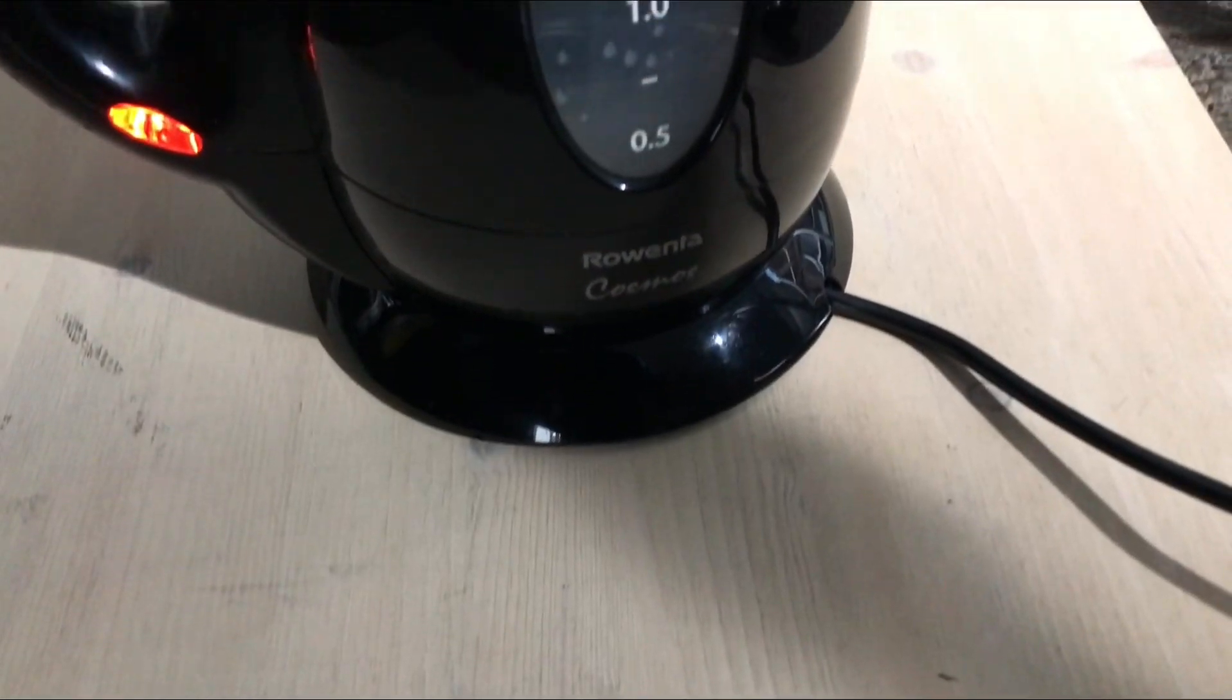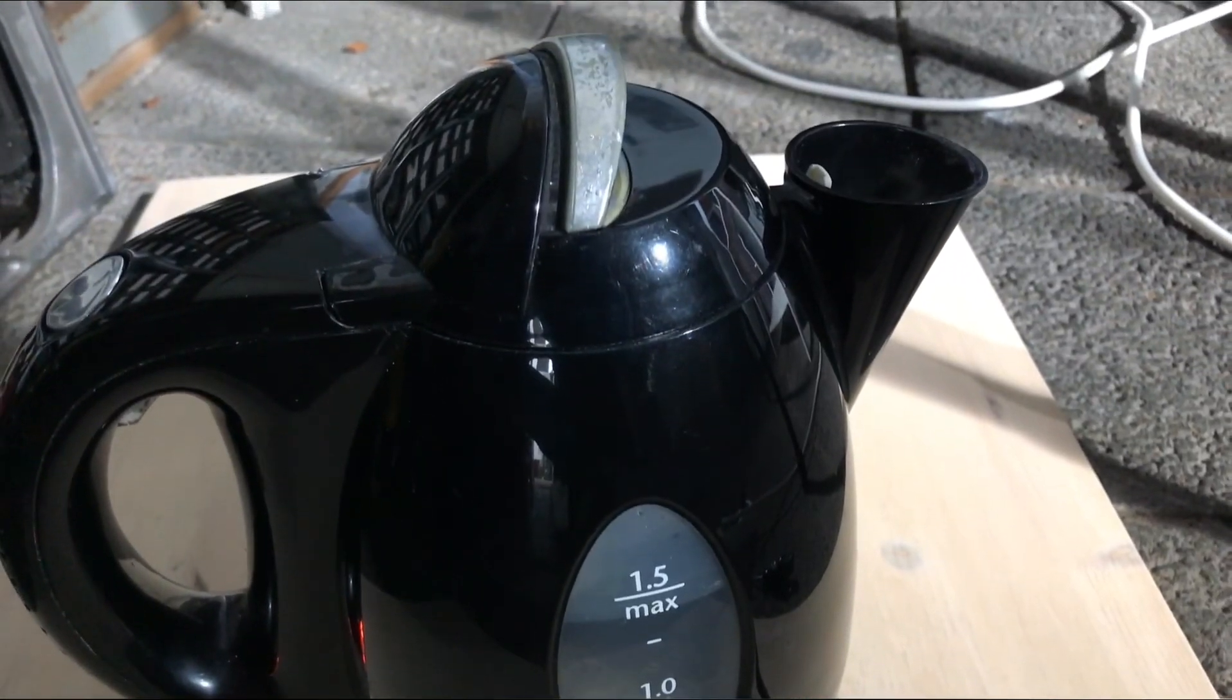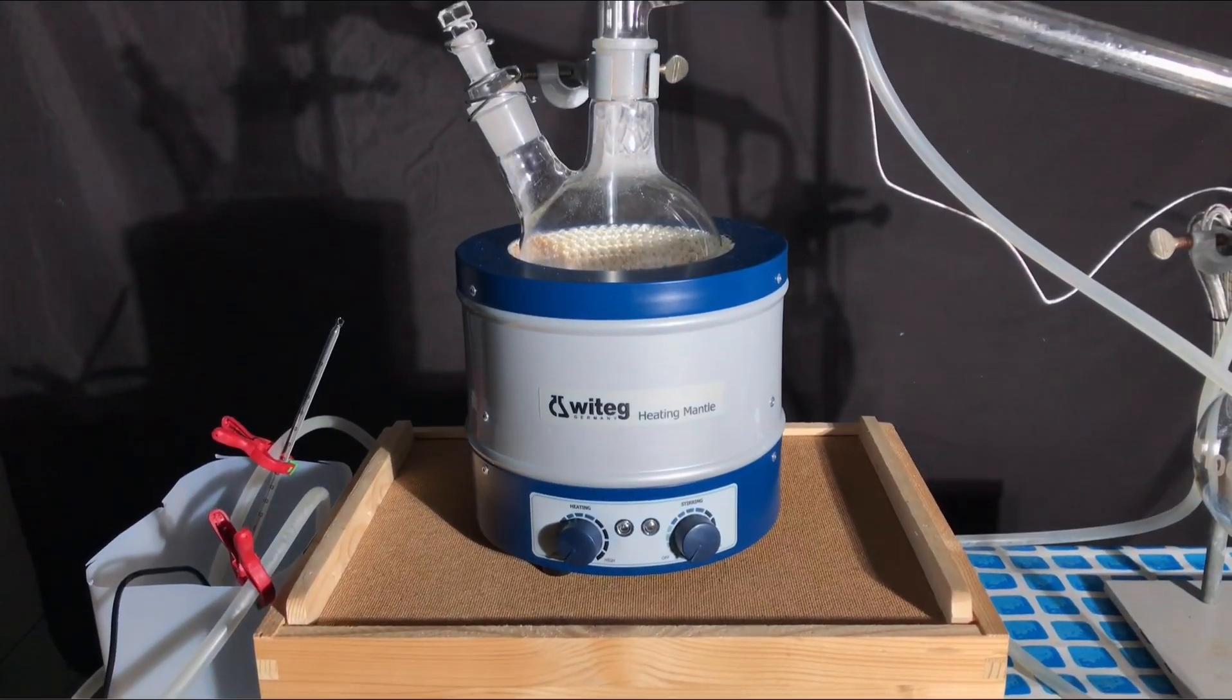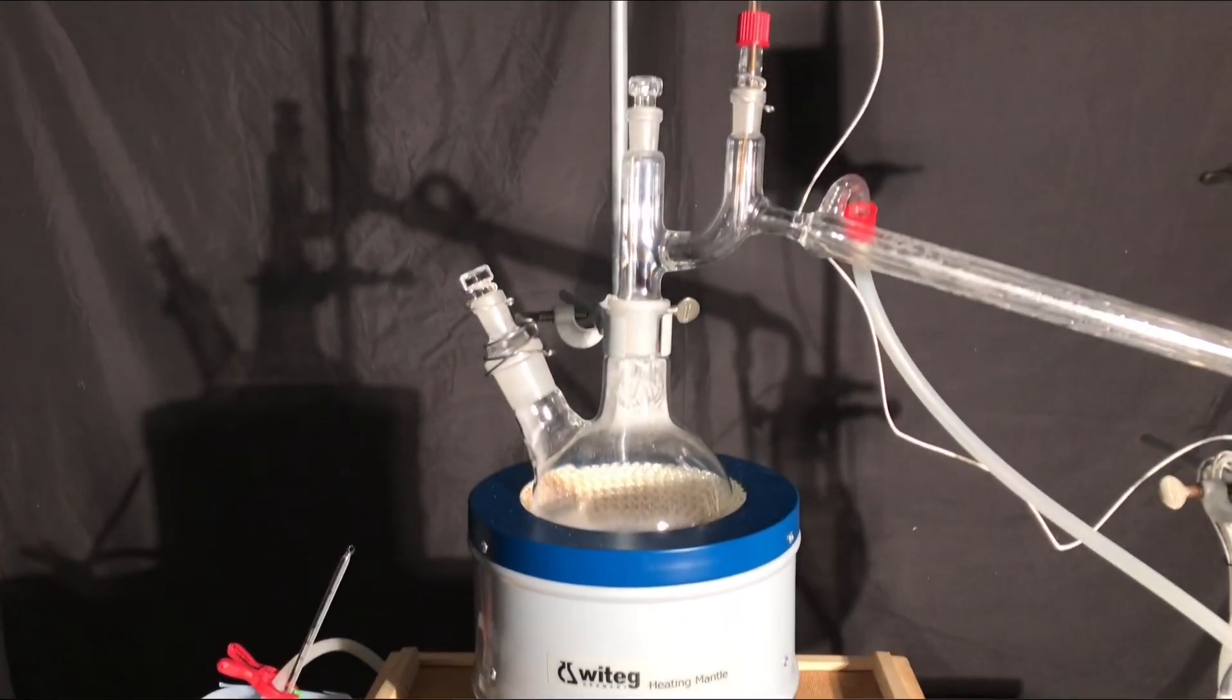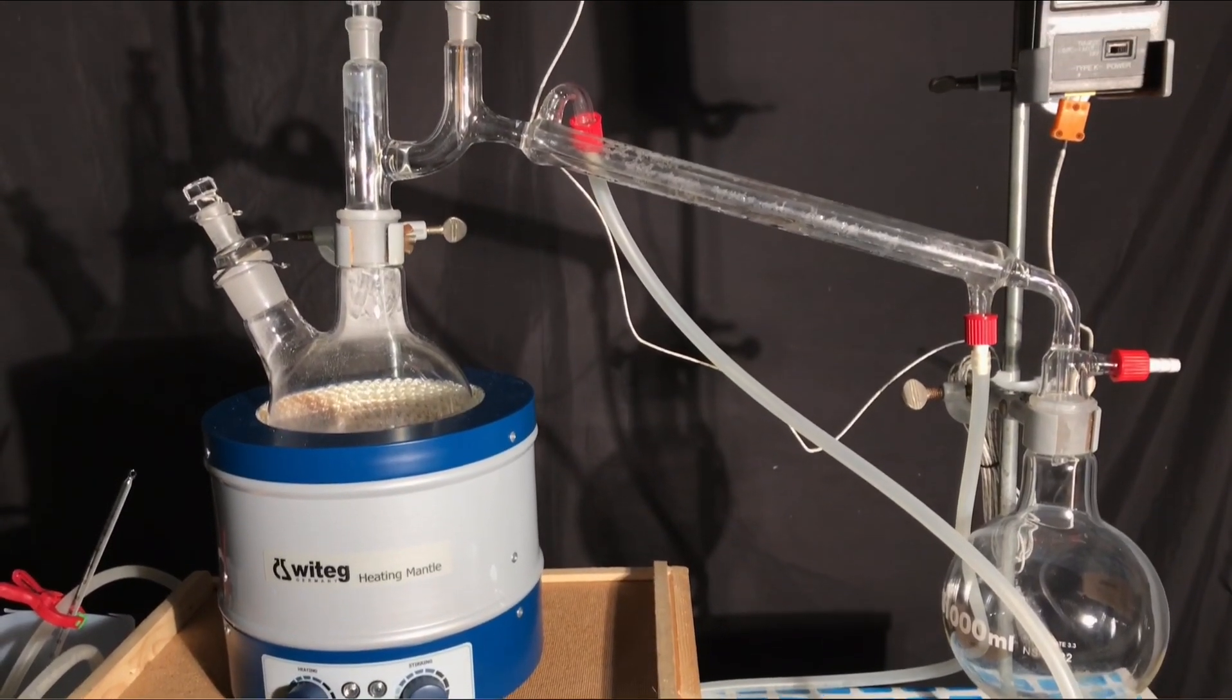The temperature of the cooling water was adjusted by adding boiling water when needed. And there you go, this was our apparatus for making phenol. It was only a slightly modified simple distillation apparatus.